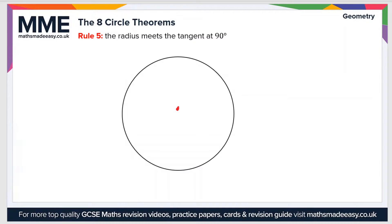Rule number five: the radius meets the tangent at 90 degrees. Here I've drawn a radius, which is a straight line from the center of the circle to a point on the circumference. A tangent is a straight line touching a single point on the edge of a circle.